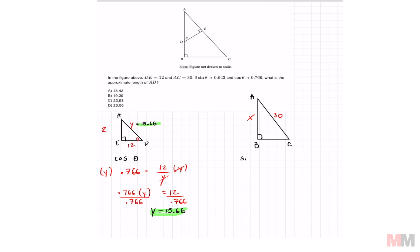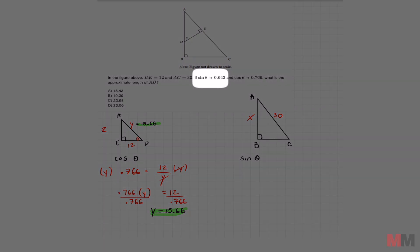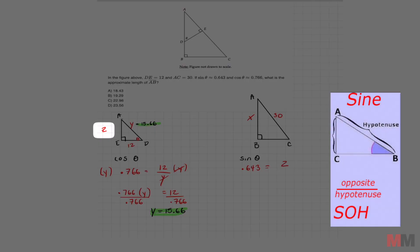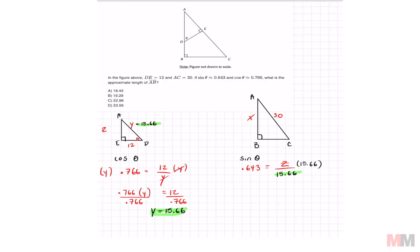To solve for Z sine theta which we are given as approximately 0.643 and sine is opposite which is Z over hypotenuse which we just found 15.66. Multiply both sides by 15.66 and we get Z by itself. Z is approximately 10.07.